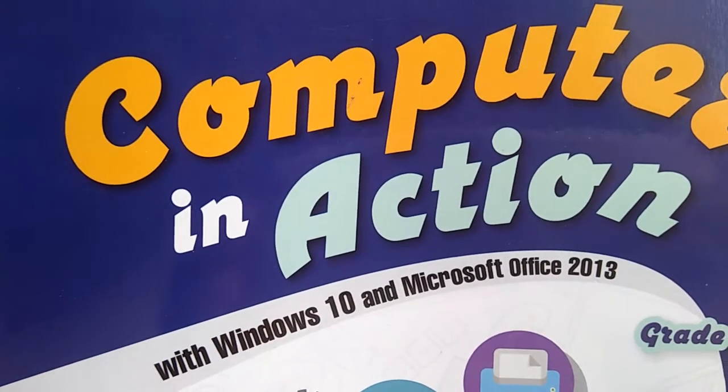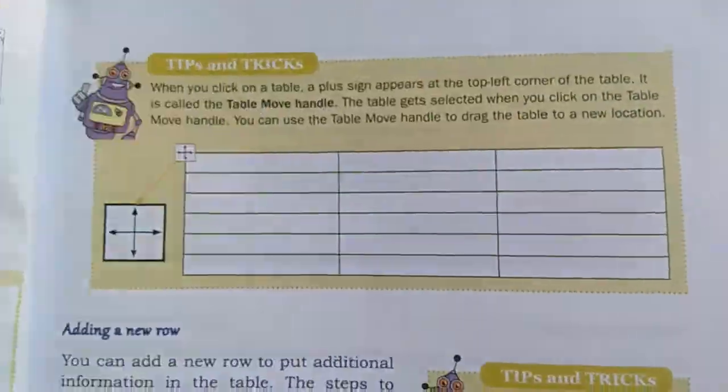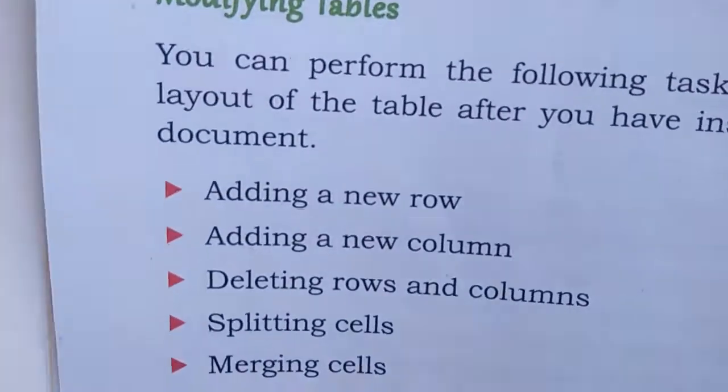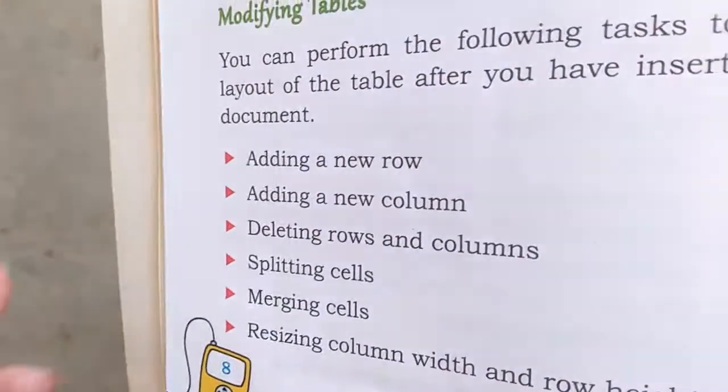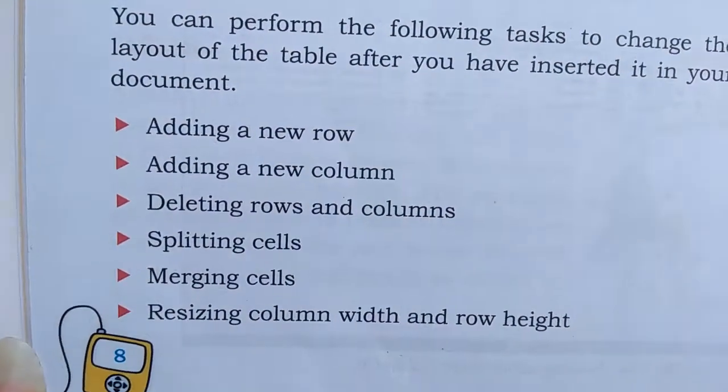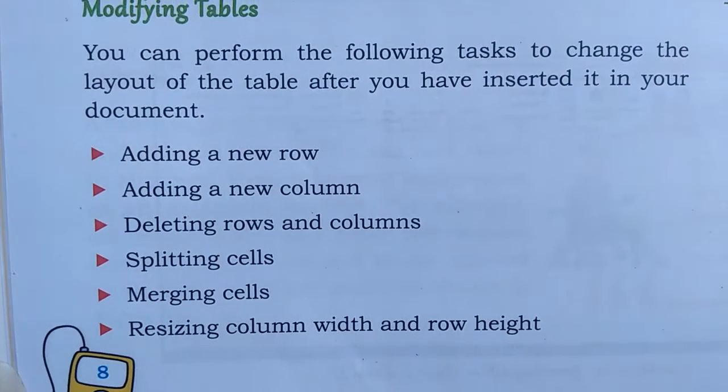Just open your book. Here are different options to modify tables. You can add new rows and columns, delete rows and columns, split cells, merge cells, and resize column width and row height. These are the different options we can use to modify our tables.